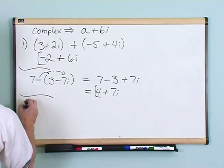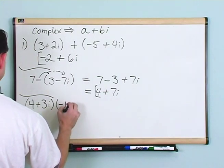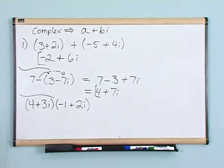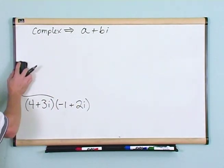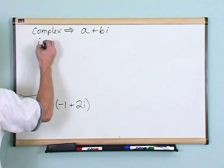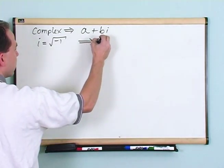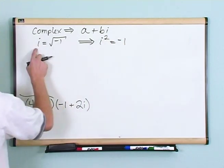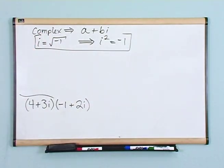Now let's try multiplication of complex numbers: (4 + 3i)(-1 + 2i). Before diving in, there are two things to always keep in mind. First: i = √(-1) — just memorize that. Second, it follows directly: i² = i × i = -1. If you square both sides of the first definition, you get i² = -1. You must remember these two things.